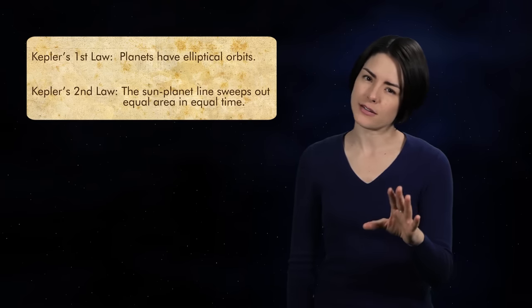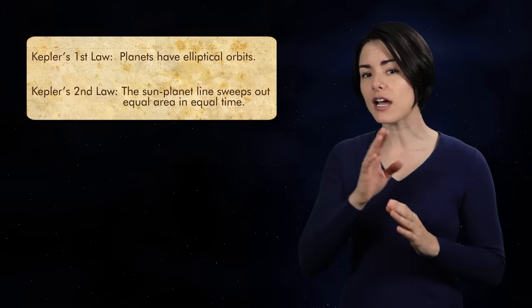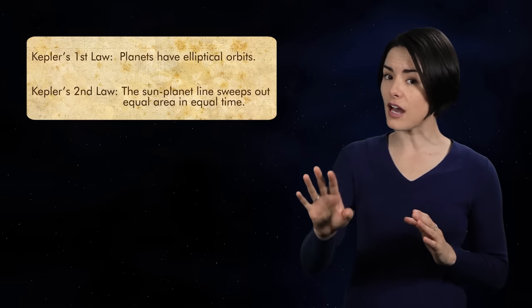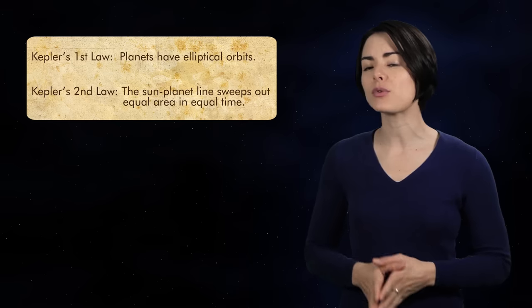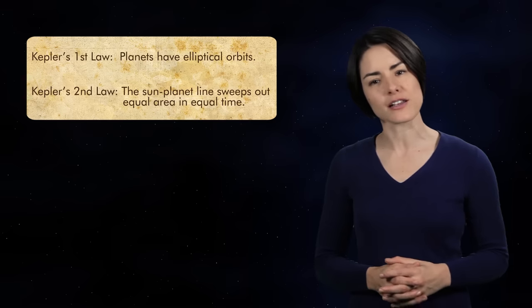These two statements, that Mars travels in an elliptical orbit and that its speed varies so that the Mars-Sun line sweeps out equal areas in equal time, were generalized to include all planets in 1621, and they constitute Kepler's first and second laws of planetary motion.